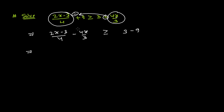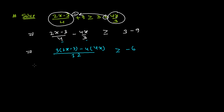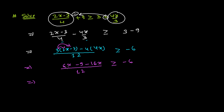Now I need to do simplification. The LCM of 4 and 3 is 12. When 4 divides 12 I get 3, so 3 multiplies (2x minus 3). Similarly, 3 divides 12 to give 4, which multiplies 4x. This gives us 6x minus 9 minus 16x, which is greater than or equals to minus 6.